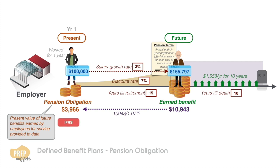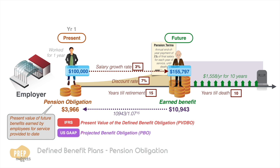Under IFRS, this is termed present value of the defined benefit obligation, and projected benefit obligation under US GAAP. For the rest of this video, we shall refer to this as PBO, but you should be aware of the different ways of naming it.